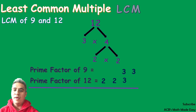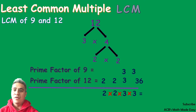All we have to do now is to bring all the factors down. The next step is to multiply them all: 2 times 2 times 3 times 3. Our answer is equal to 36. Therefore, the LCM of 9 and 12 is 36.